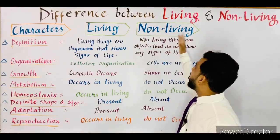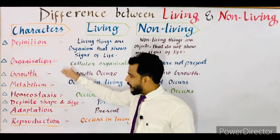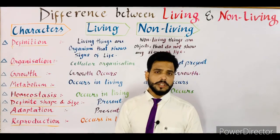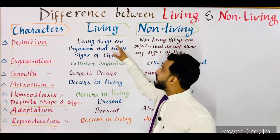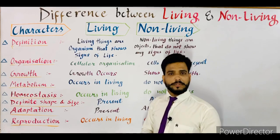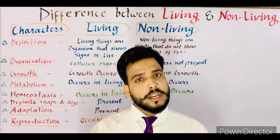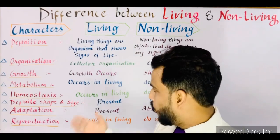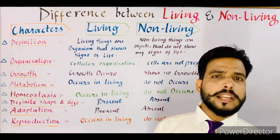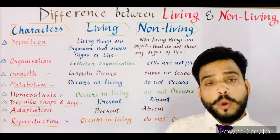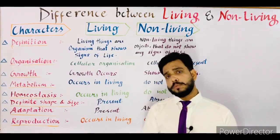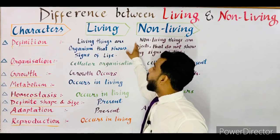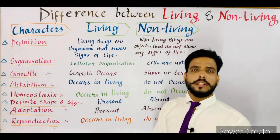I'm going to start telling you about the difference between living and non-living. First I'll give you the definition. Living things are organisms that show signs of life. If any organism shows characteristics of life such as reproduction, adaptation, definite shape and size, homeostasis, metabolism, etc., all these characters are the signs of life. If any organism shows these different characteristics of life, then you can say that it is living.